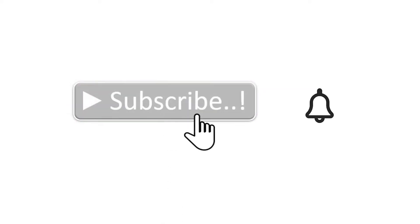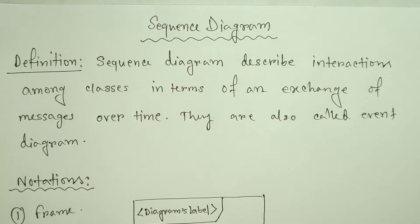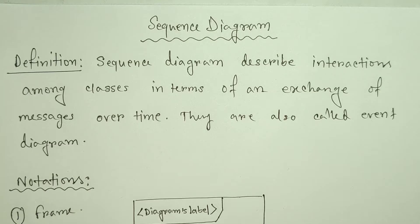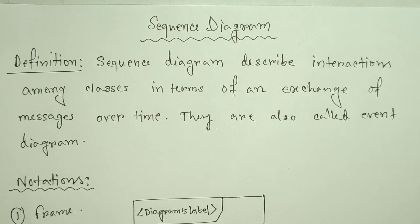Assalamualaikum, I am Yasif. Today I am going to see the sequence diagram. Basically, a sequence diagram describes interaction among classes in terms of an exchange of messages over time. They are also called event diagrams.